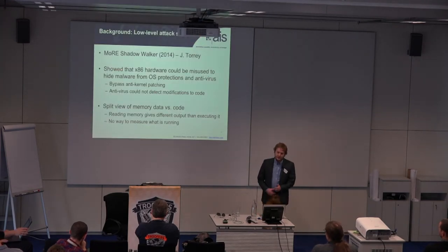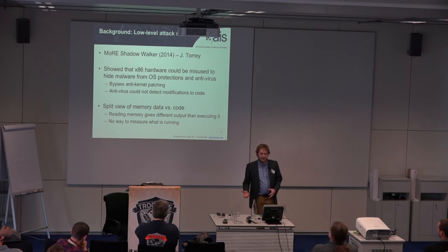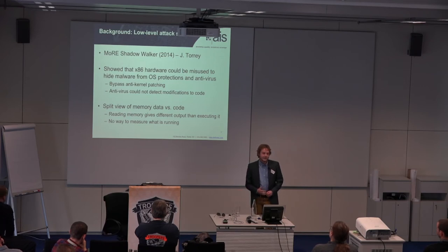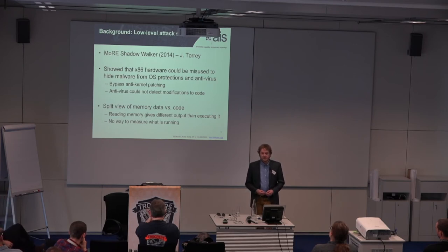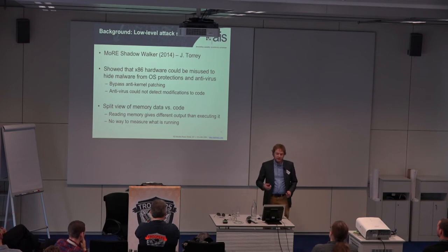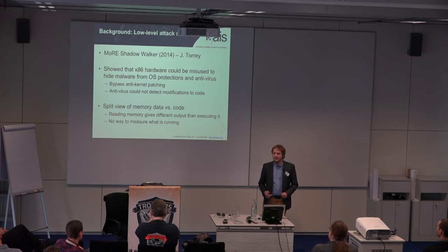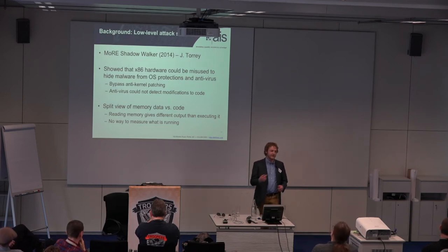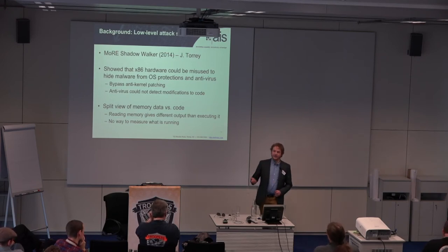Some of my work from last year showed that you could use x86 hardware to hide malware from OS protections and antivirus. There's a shadow walker rootkit that basically uses how the hardware is laid out for power efficiency and speed — it logically acts as one unit but is physically two separate components. You can activate that to bypass PatchGuard or antivirus because it has a different view of memory depending on whether you're executing at that address versus reading at that address — providing a split view of memory: data versus code. An antivirus scanning kernel space will see everything as benign, but if you jump to that region of code, you go somewhere else.